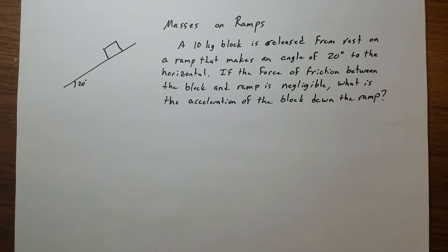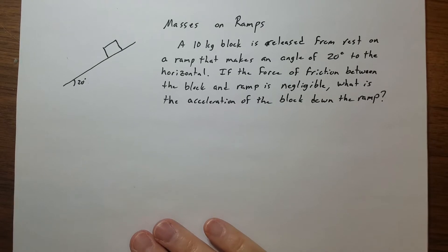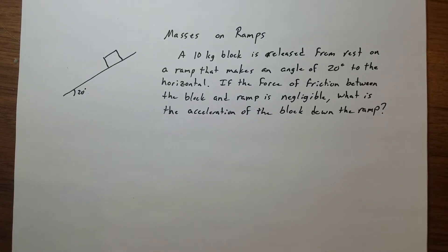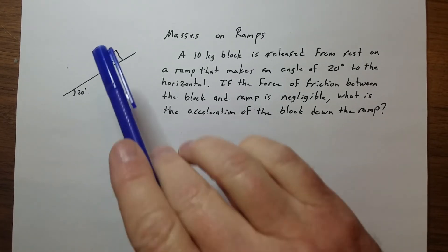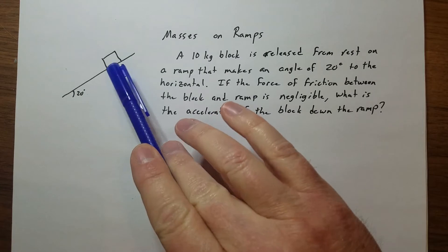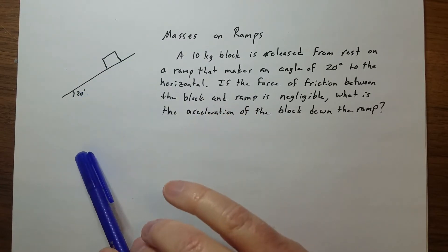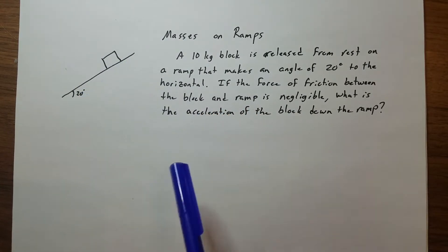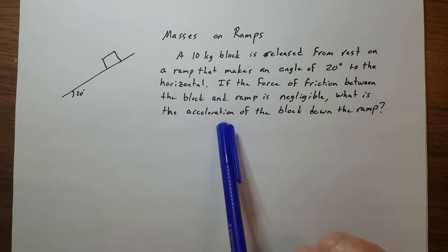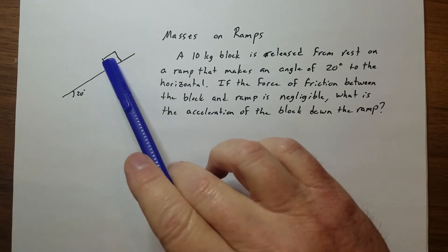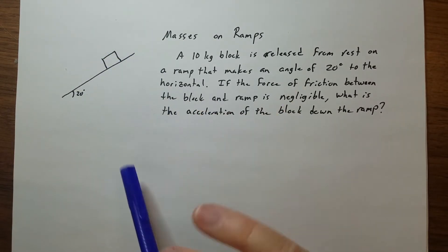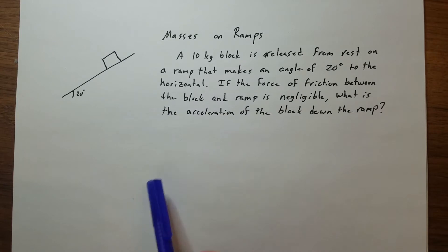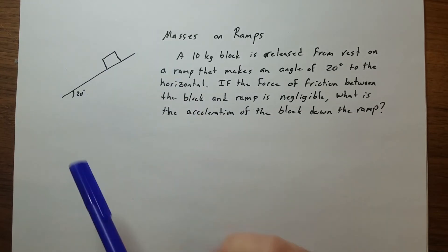This is Kenny Lee and let's talk about masses on ramps. We have a block of 10 kilograms on a ramp with an angle of 20 degrees. The frictional force between the block and the ramp is negligible — essentially no friction — and we want to find the acceleration of the block down the ramp.